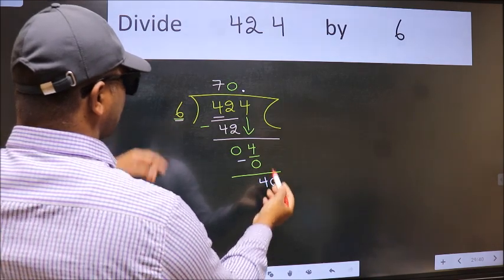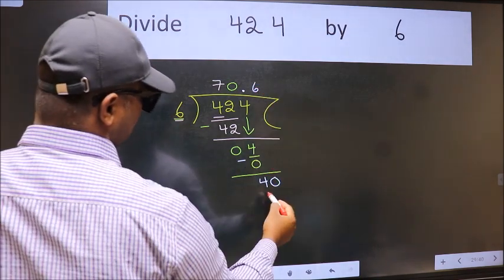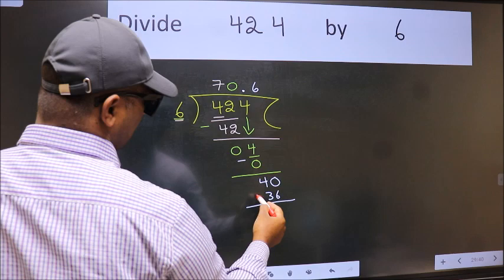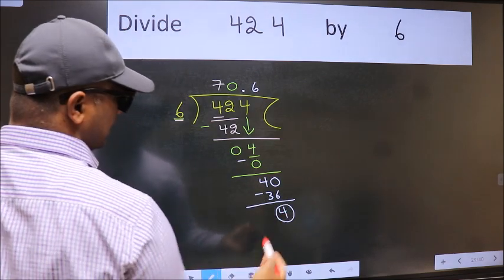So 40. A number close to 40 in 6 table is 6 times 6, 36. Now we subtract. We got 4 again.